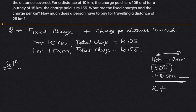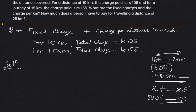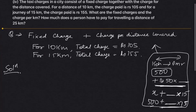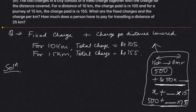So fixed charge — for example, 500 — plus charge per kilometer, say 15 rupees per kilometer. This is how the total fare is calculated: fixed charge plus charge per kilometer multiplied by distance. This question is not so difficult to solve.